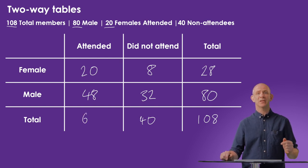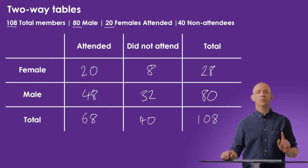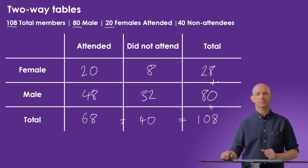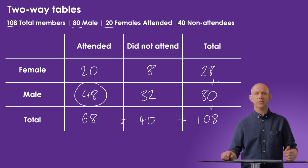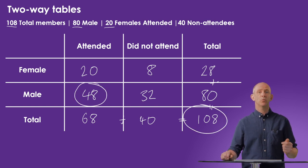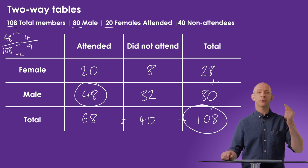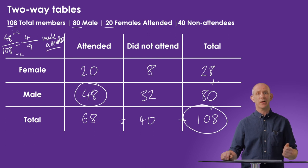If there are 80 males in total and 32 did not attend, we subtract to find that 48 males did attend. We then add 48 to 20 to find that 68 supporters attended in total. Once we've completed the two-way table, it's good practice to add the row and column totals to ensure they come to the overall total, which this one does. For the probability part: there are 48 male supporters who attended out of 108, so the probability is 48/108, which simplifies to 4/9 by dividing both by 12.